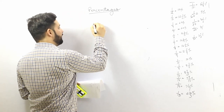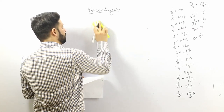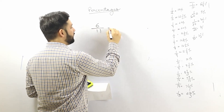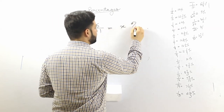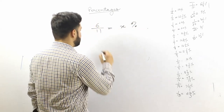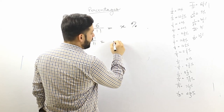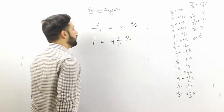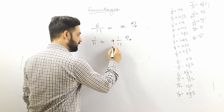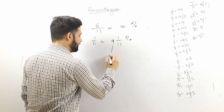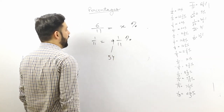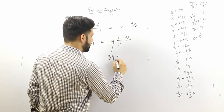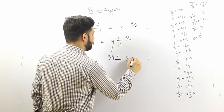Let's take another example — what is the value of 6/11 in percentage? The value of 1/11 is 9 and 1/11 percent. We multiply 9 by 6 to get 54, and the numerator by 6 to get 6/11. So the answer is 54 and 6/11 percent.